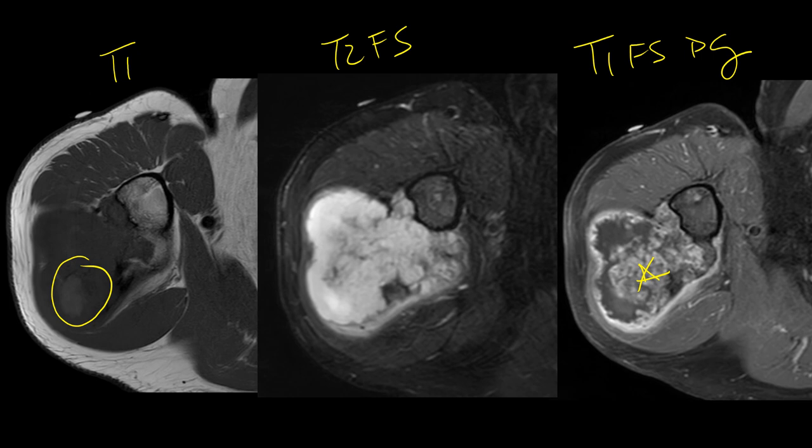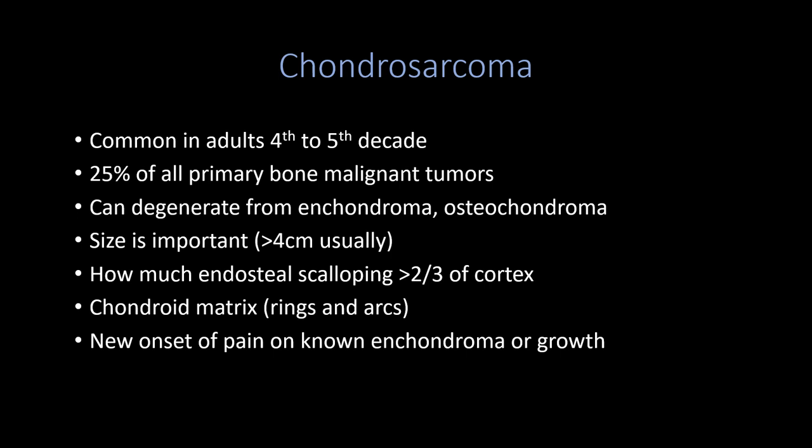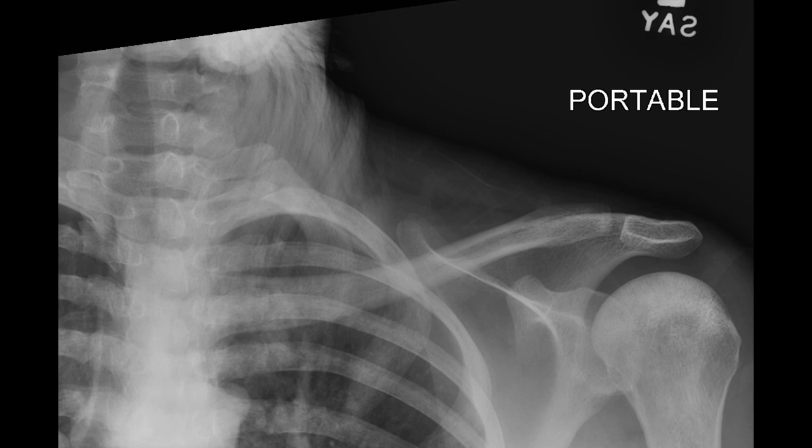Chondrosarcoma is a fairly common malignant primary bone tumor, up to 25% of cases. It can degenerate from an enchondroma or osteochondroma. With enchondroma, endosteal scalloping involving more than two-thirds of the cortex warrants further imaging or biopsy. The chondroid matrix is common in adults in the fourth to fifth decade. Any enchondroma or osteochondroma with new onset of pain or growth should raise concern for degeneration.